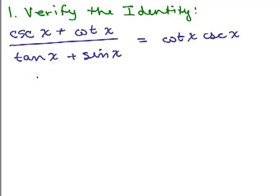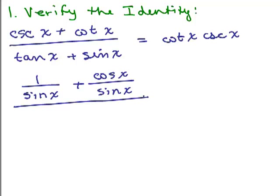So cosecant of X is 1 over sine of X, and cotangent is cosine of X over sine of X. And in the denominator, we've got tangent of X. That's sine of X over cosine X plus sine of X.